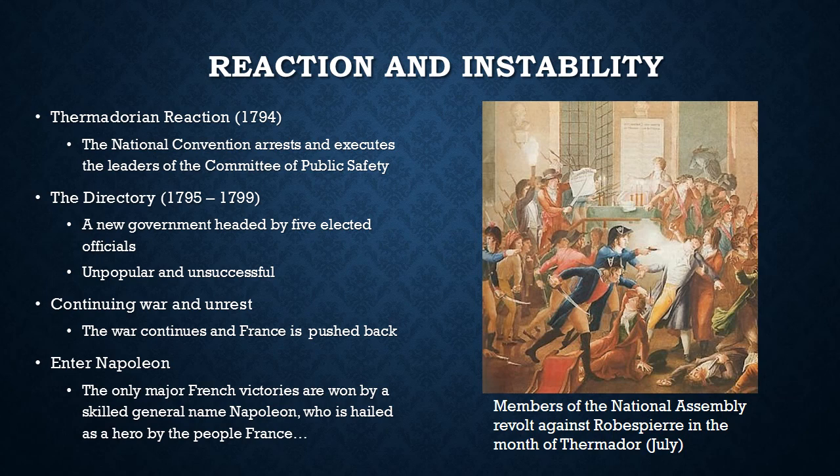This period is called the Thermidorian Reaction, when the Reign of Terror was brought to an end. After this, a new system of government called the Directory was put in place, lasting four years. The Directory was pretty unpopular and unsuccessful — they kept fighting the war against France's many enemies but weren't doing a great job, and it seemed like the French Revolution might still fail. But there was one bright spot: a general named Napoleon Bonaparte, a very bright young man who had worked his way up the ranks of the French army and begun winning major battles. He was viewed as a hero and became incredibly popular, eventually returning to Paris and beginning to plot to take over the government and make himself the leader of France.